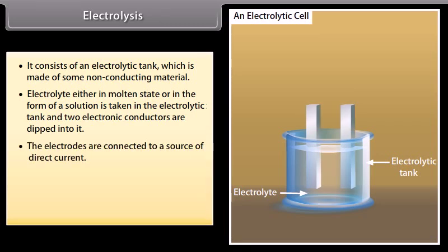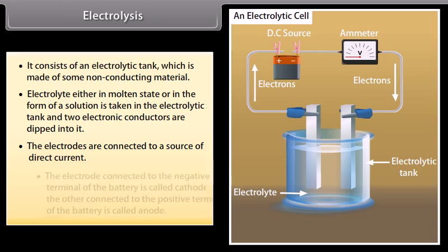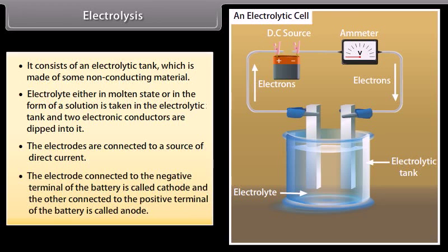The electrodes are connected to a source of direct current. The electrode connected to the negative terminal of the battery is called cathode, and the other connected to the positive terminal of the battery is called anode.